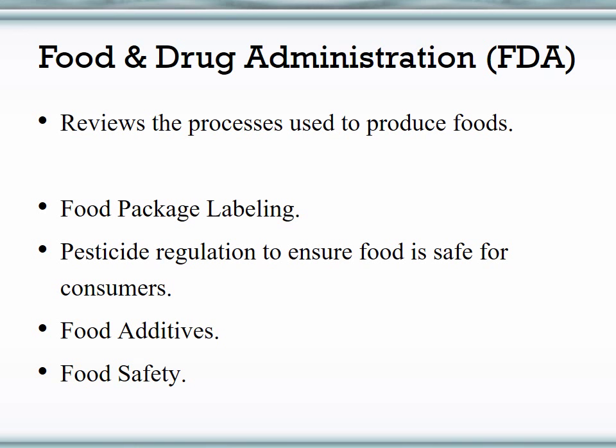The Food and Drug Administration is responsible for reviewing the processes used to produce foods. The FDA does not necessarily examine the actual foods themselves — it more so looks at and establishes guidelines for how we produce our foods. The different areas it is responsible for include food package labeling, pesticide regulation as it relates to ensuring safety for consumers, food additives, and food safety.